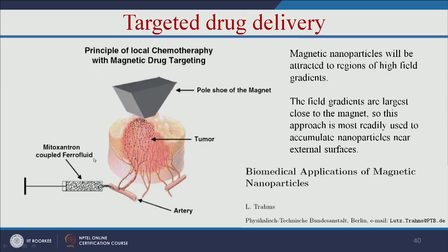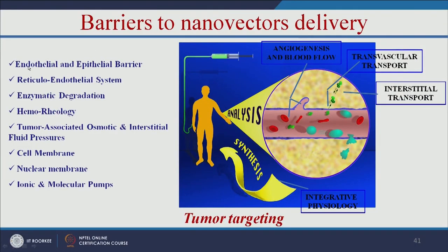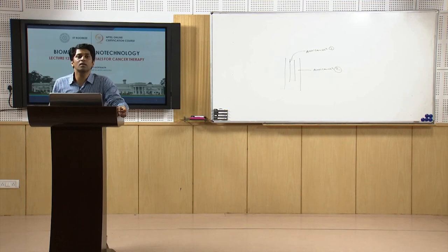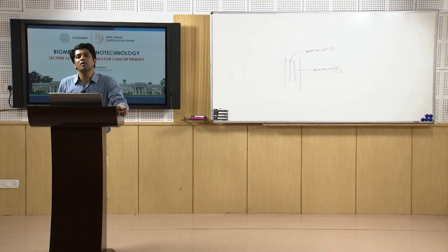Anti-cancer drug-loaded iron oxide nanoparticles injected into the artery go to the tumor location, where a magnet can hold them for longer, enabling drug release for targeted cancer therapy. Some barriers to nano-vector delivery remain, including endothelial and epithelial barriers, reticuloendothelial system, enzymatic degradation, and hemorrheology. Most barriers have been overcome by recent advances in nanotechnology, but some still need to be addressed to make nanotechnology-based therapy an efficient treatment for cancer.